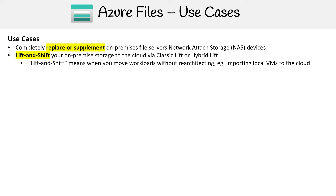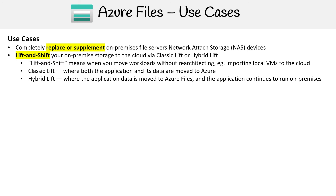The idea is you used to use on-premise and you want to use Azure, but you're trying to keep things as similar as you can. A very common lift and shift from on-premise to the cloud is just taking your virtual machines and copying them over to the cloud with nothing else changed. In the case of storage, a classic lift is where both the application and its data are moved to Azure. In a hybrid lift, the application data is moved to Azure Files but the application continues to run on-premise. So clearly, a classic lift brings everything over, while a hybrid lift leaves the application behind.